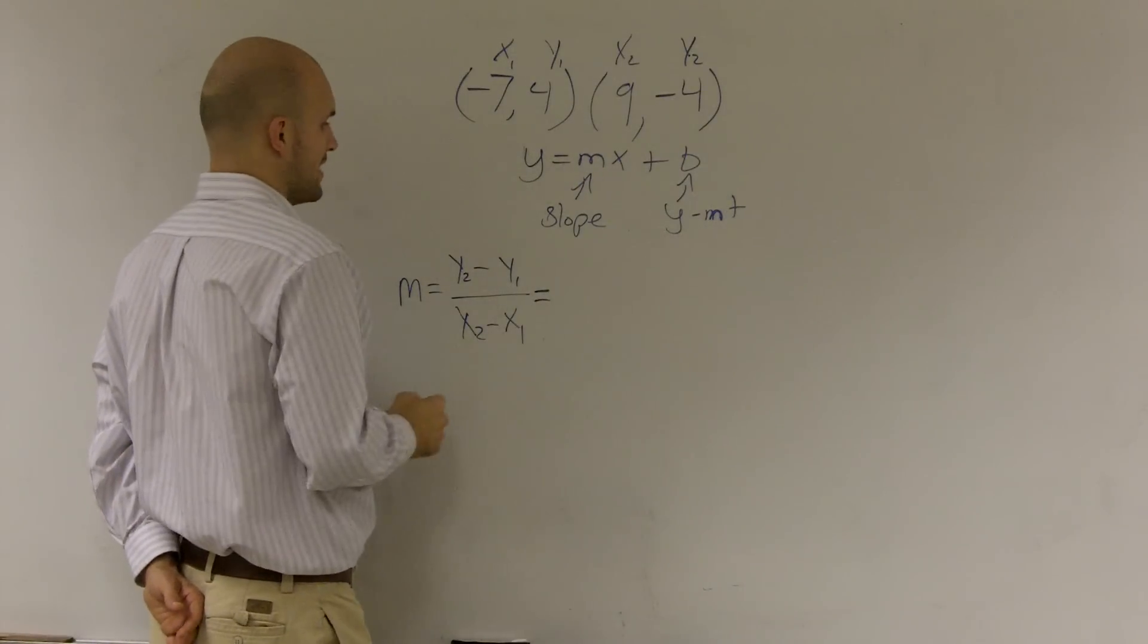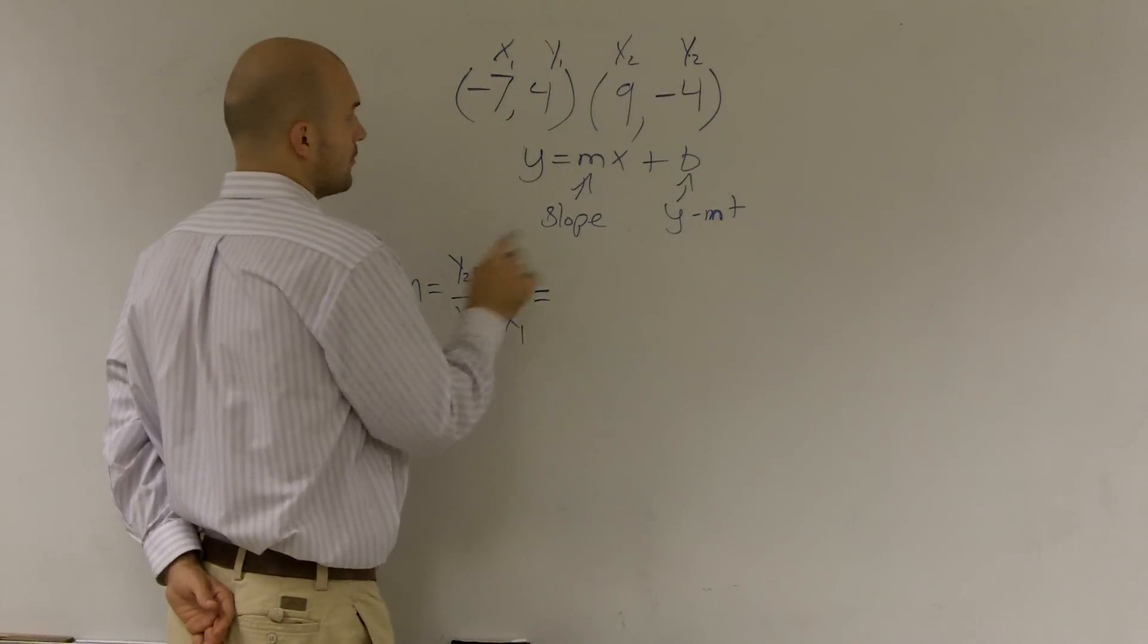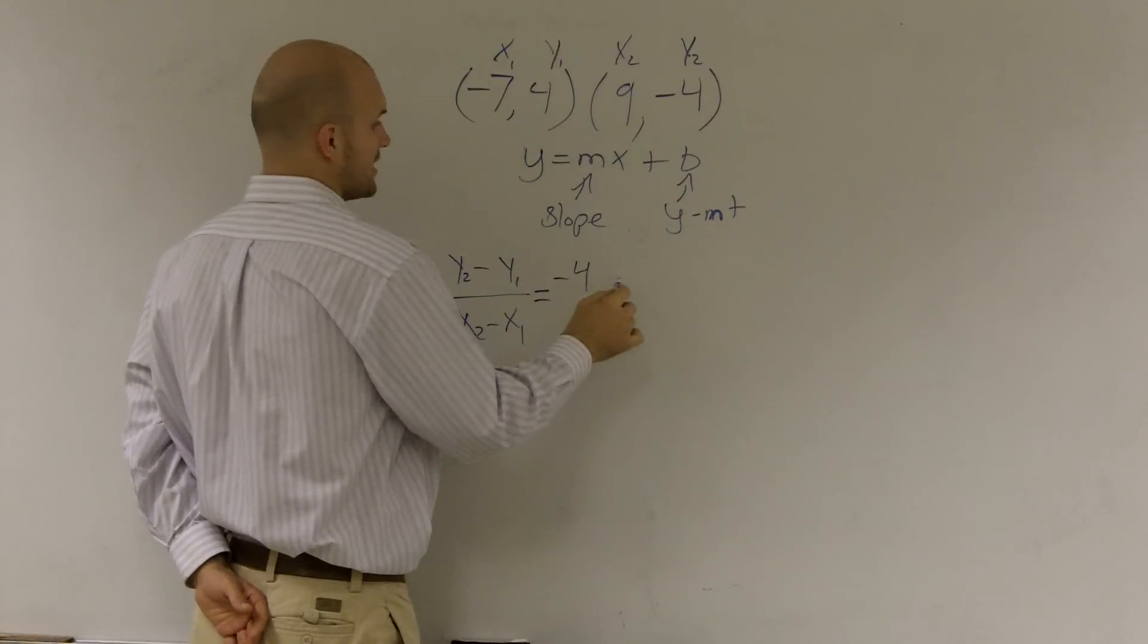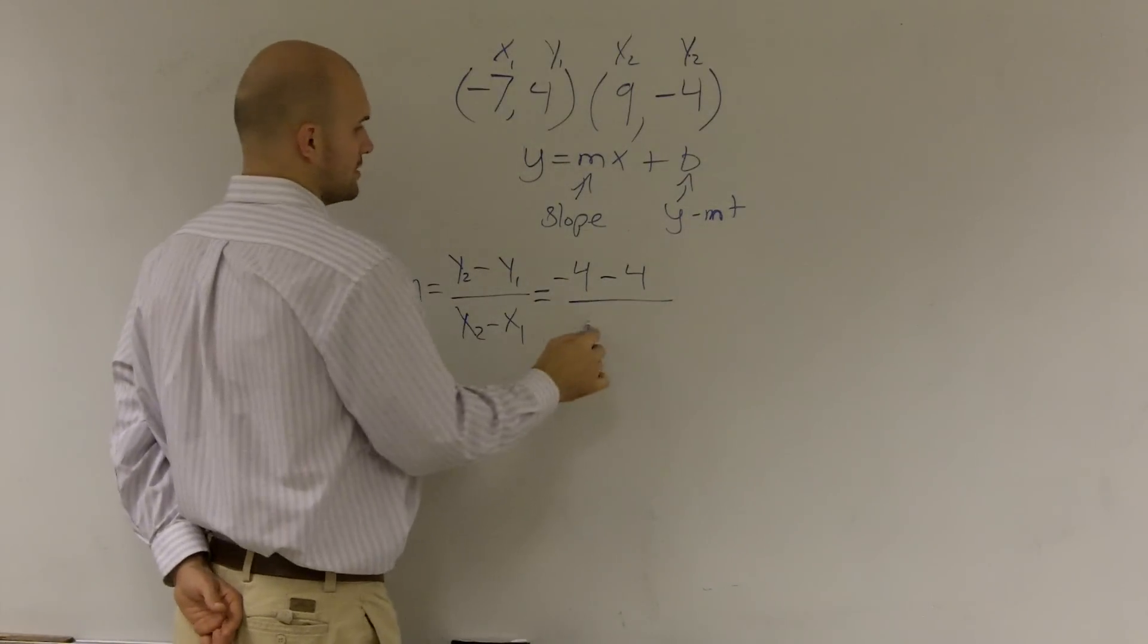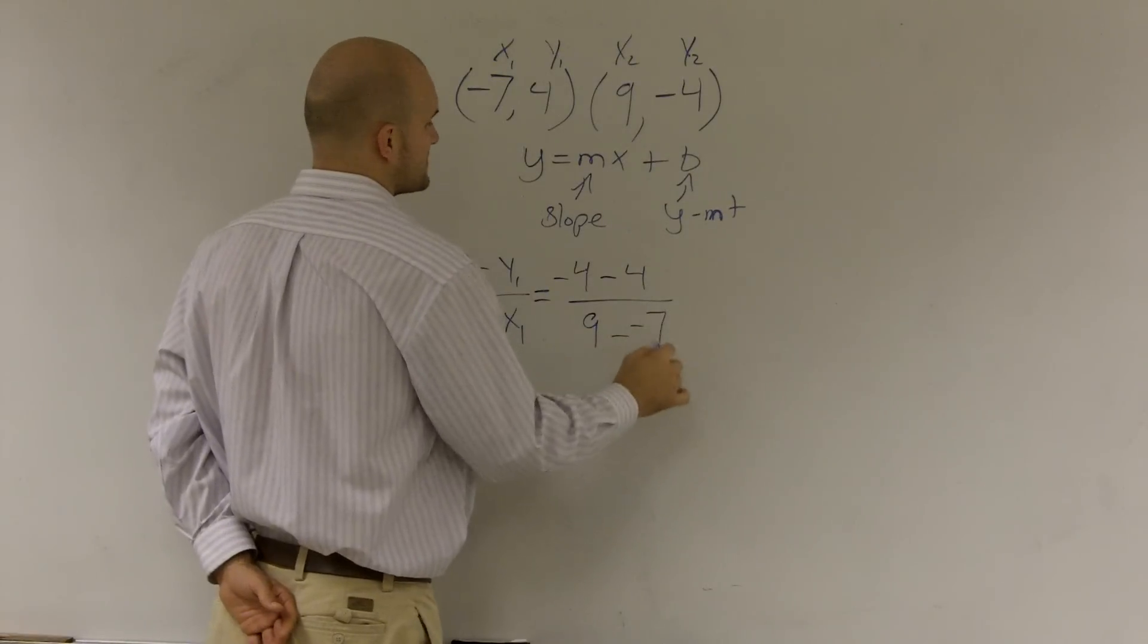So therefore, now what I have is y2 minus y1. I'll just plug them in: negative 4 minus 4, all over 9 minus negative 7.